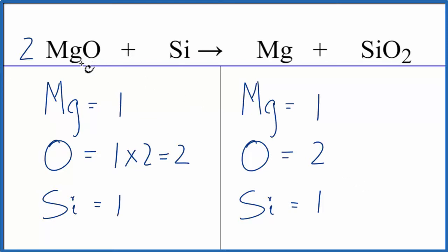But one magnesium times two gives us two magnesium atoms. So now we need to balance the magnesium atoms. We have two on the reactant side and only one on the product side of the equation. So we'll put a coefficient of 2 in front of the Mg. One times two gives us two magnesium atoms, and now those are balanced.